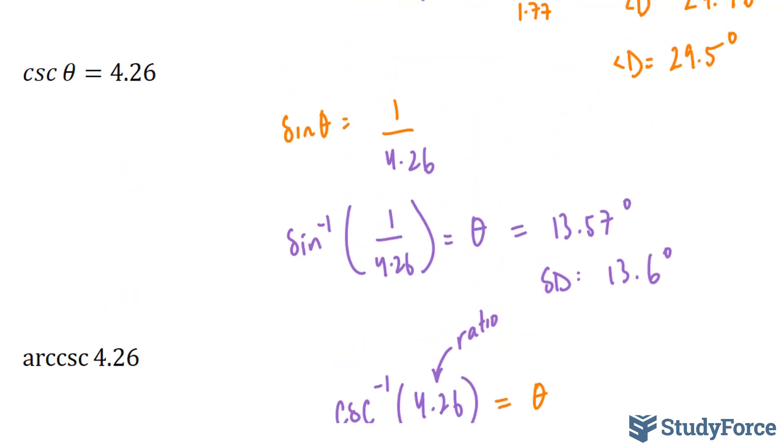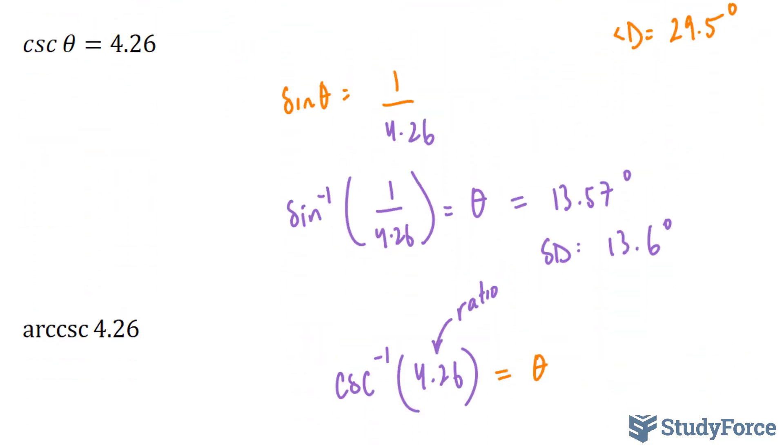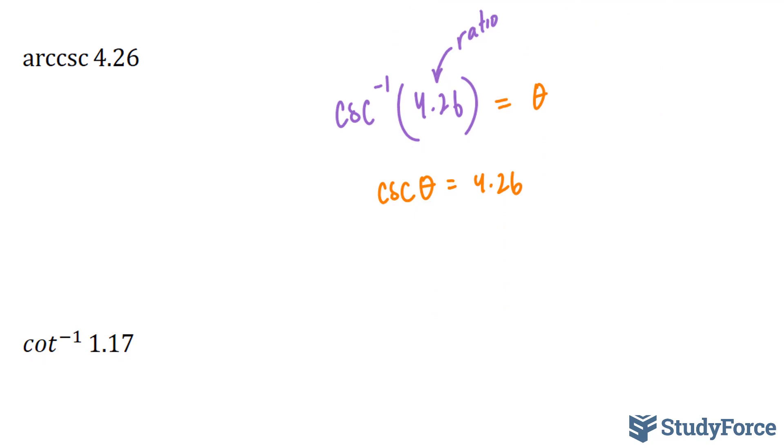So cosecant theta is equal to 4.26. This is what it looked like in these previous examples, if you recall. Now it's easy. Now we know the relationship between cosecant and sine. So we know that sine, and 4.26 represents cosecant. So we will replace this with 4.26.